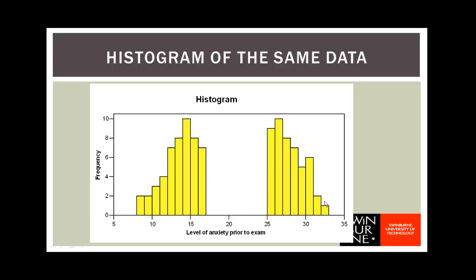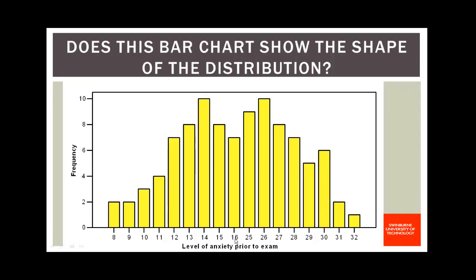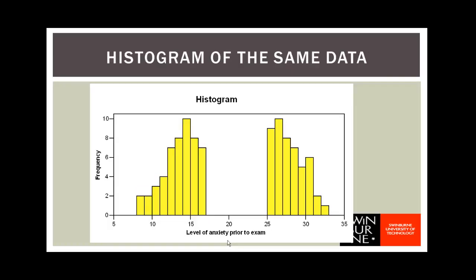In the bar chart, if you look closely, you see that the bars are labeled 16 and then the next one is 25. There are no bars for 17, 18, 19, and so on, because there were no participants who actually had those levels of anxiety. So in the bar chart, that really interesting feature of the distribution - the fact that there's a gap between 16 and 25 - just doesn't show up at all. But it shows really clearly on the histogram.